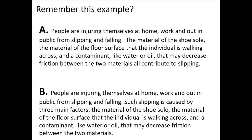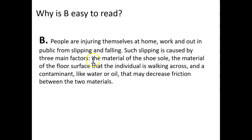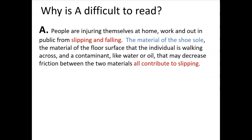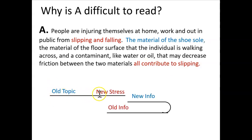Let's look back at this example. Why is B easier to read? Version B follows the known new contract: it ends the first sentence by introducing 'slipping and falling' in the stress position, and then the next sentence links back with 'such slipping.' The end of that sentence introduces new information — the factors. Version A does the opposite: the first sentence stresses 'slipping and falling,' but the link back doesn't come until the very end of the next sentence. In A, you have to read the sentence twice. Its pattern is old topic, new stress, then new information, then old in the stress position — exactly the opposite.